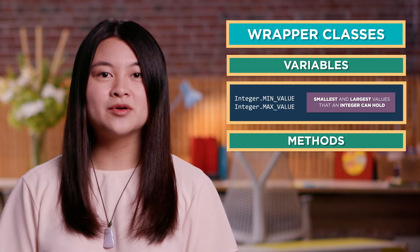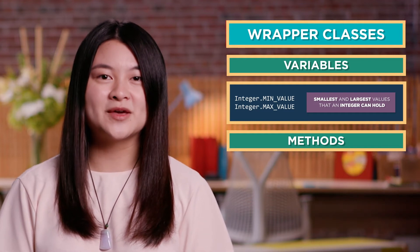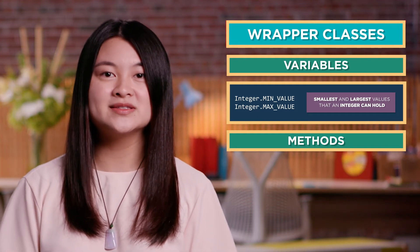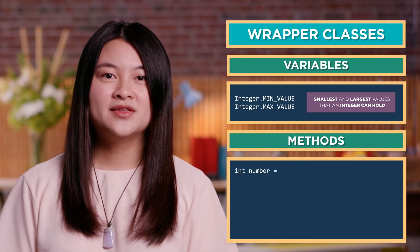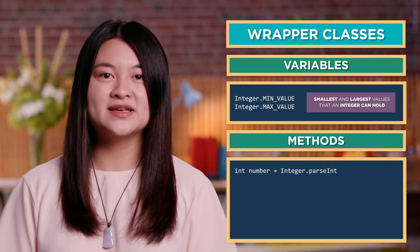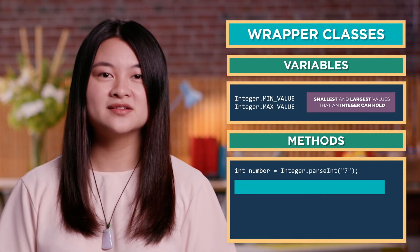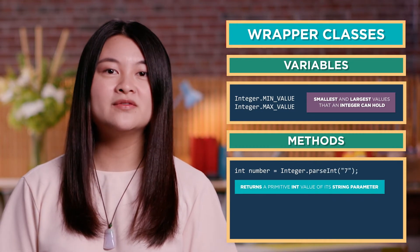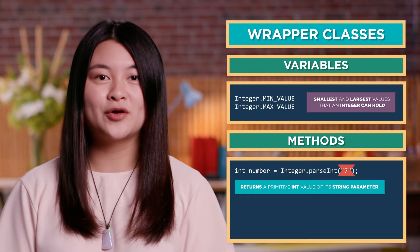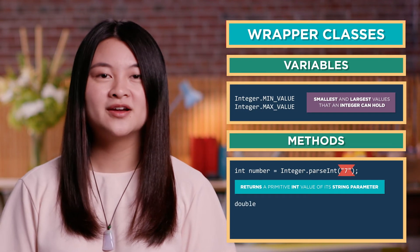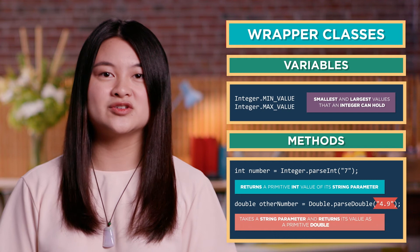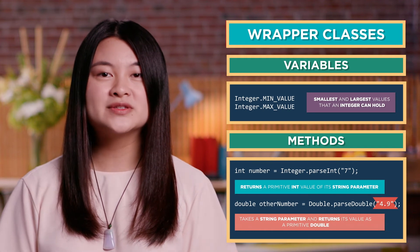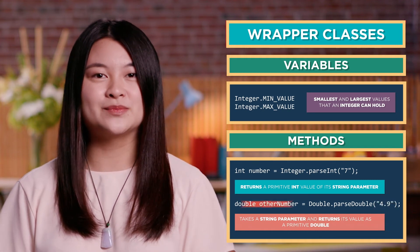The Integer and Double classes also contain static methods used to convert strings into numbers. These are called directly from the class. The Integer.parseInt method returns the primitive int value of its string parameter. The Double.parseDouble method also takes in a string parameter and returns its value as a primitive double.